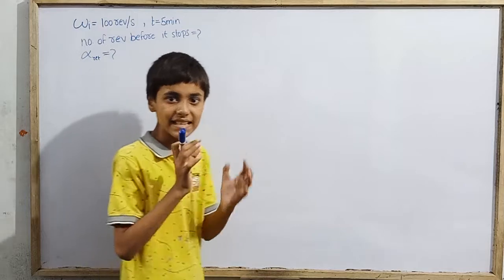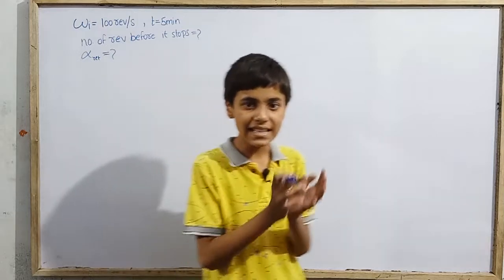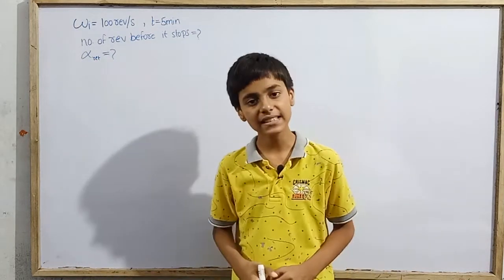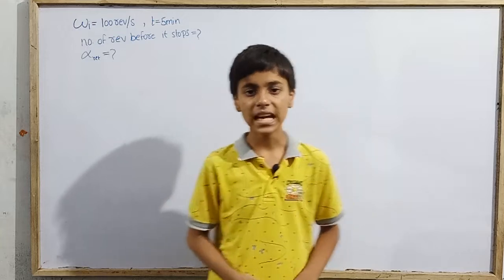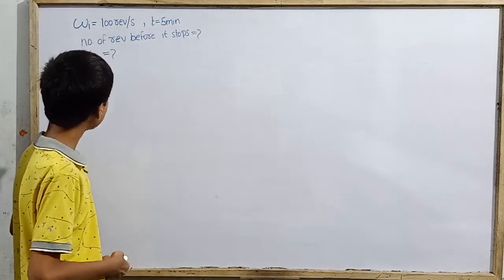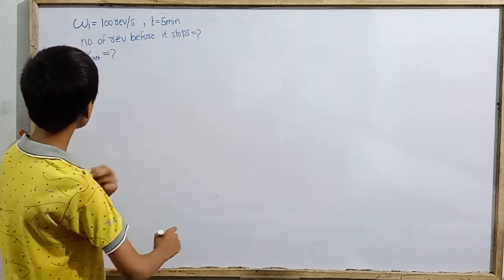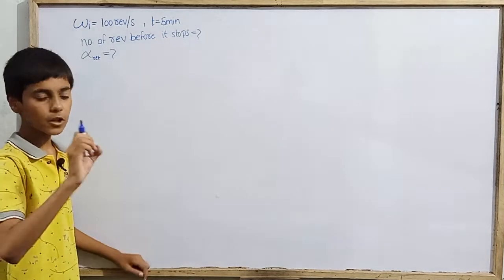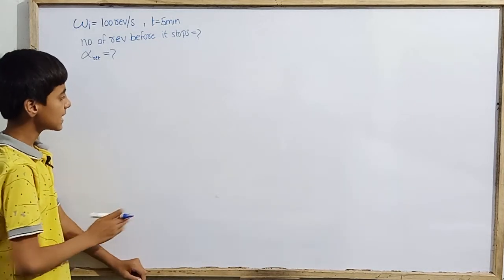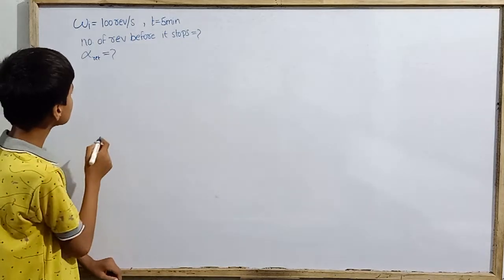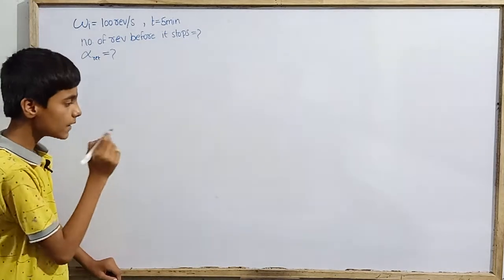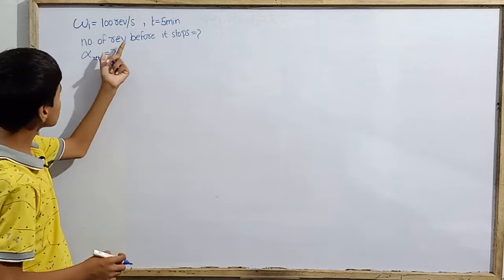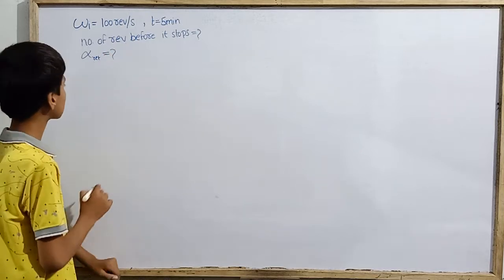First of all, we have to find how many revolutions the fan makes before it comes to rest, and also find the retardation — which means negative acceleration or deceleration. It will be very easy to find the number of revolutions once we already know the retardation. So first, let's find the retardation.